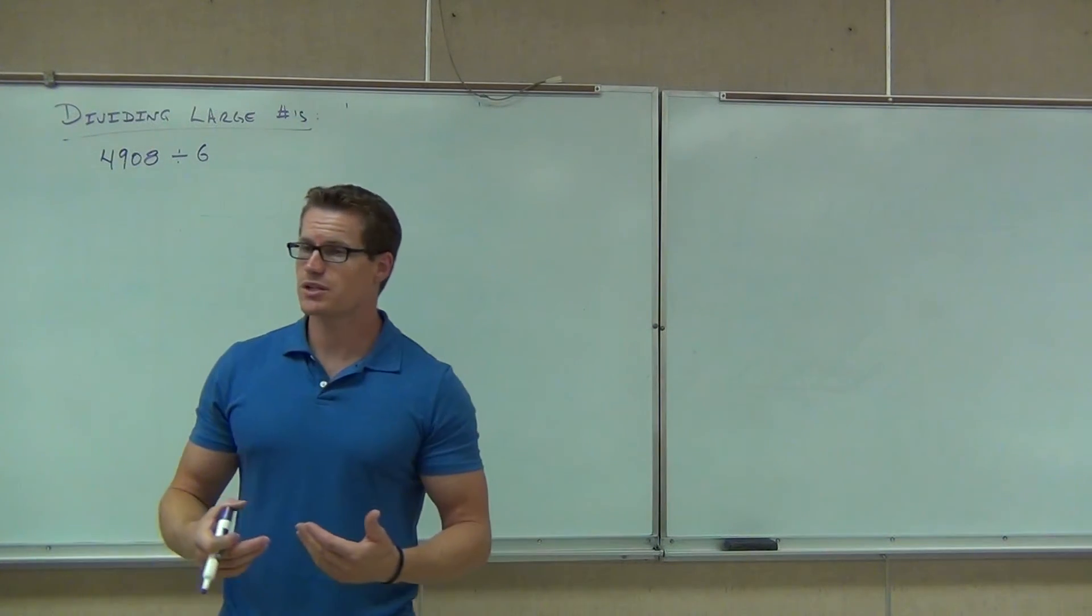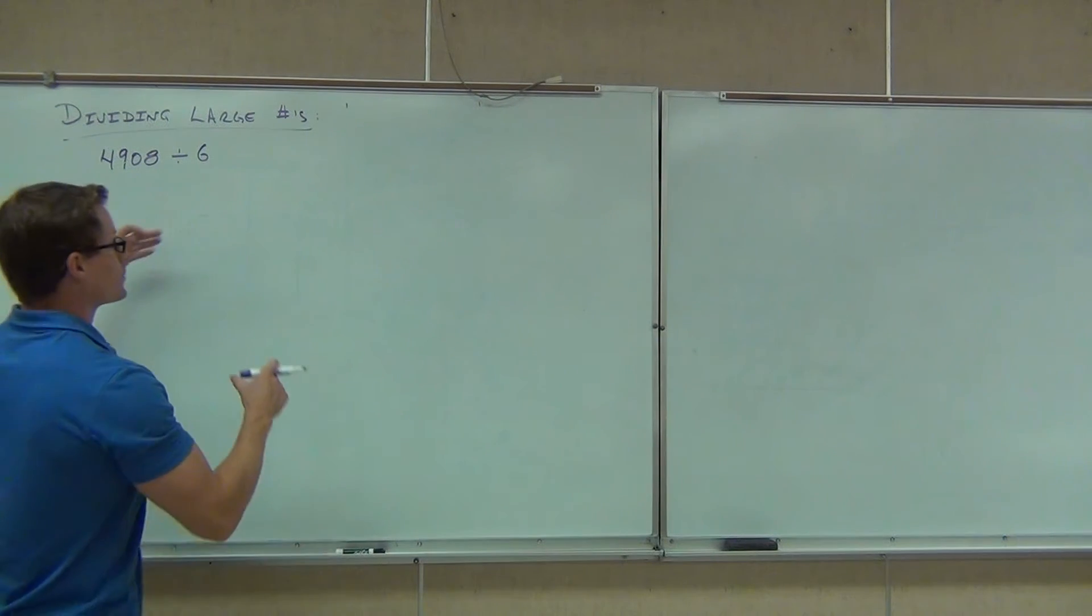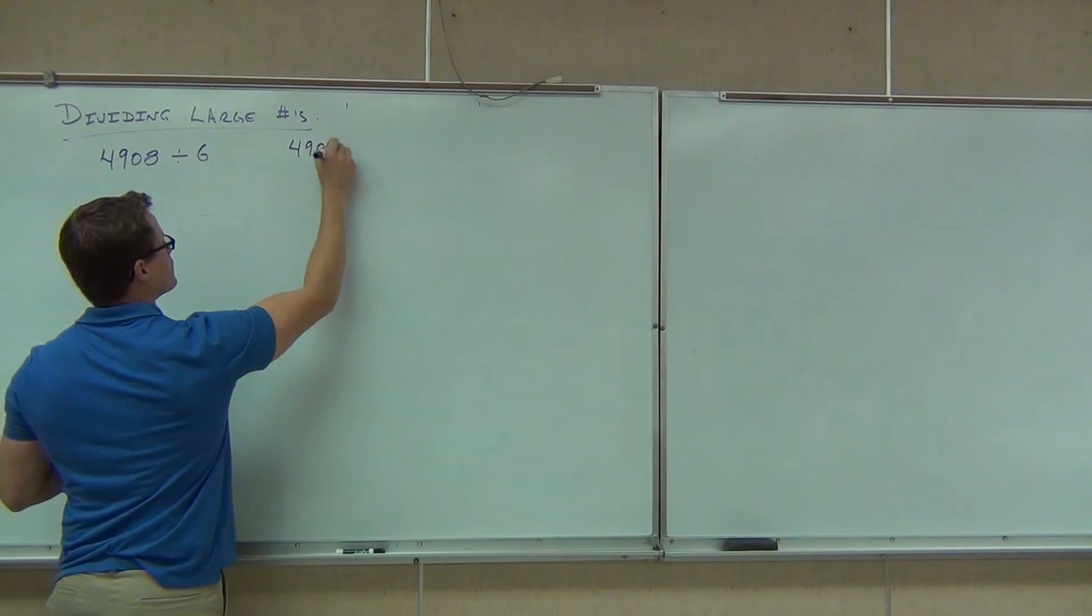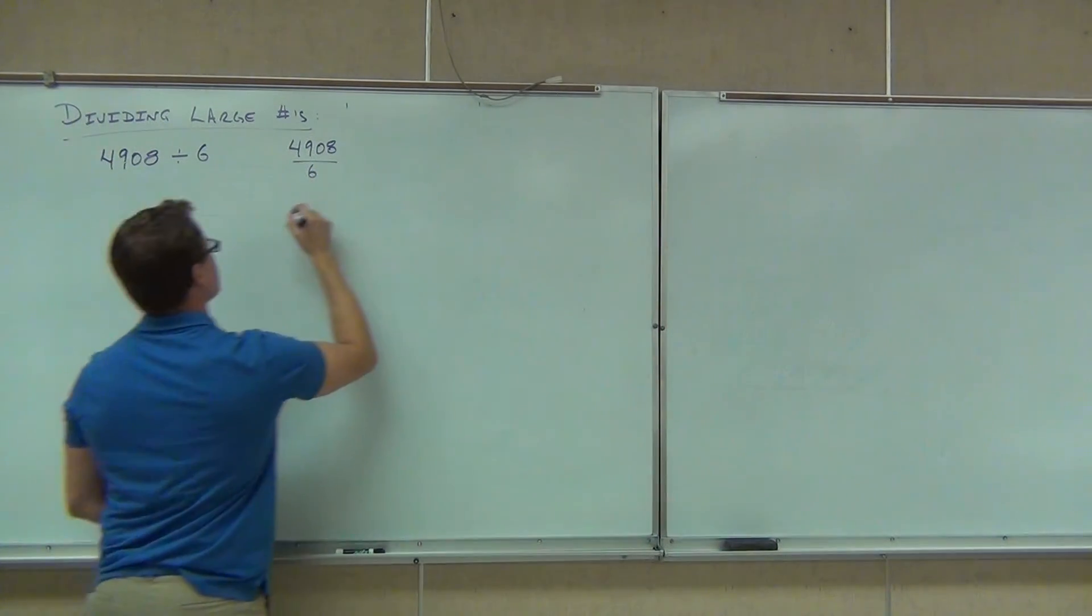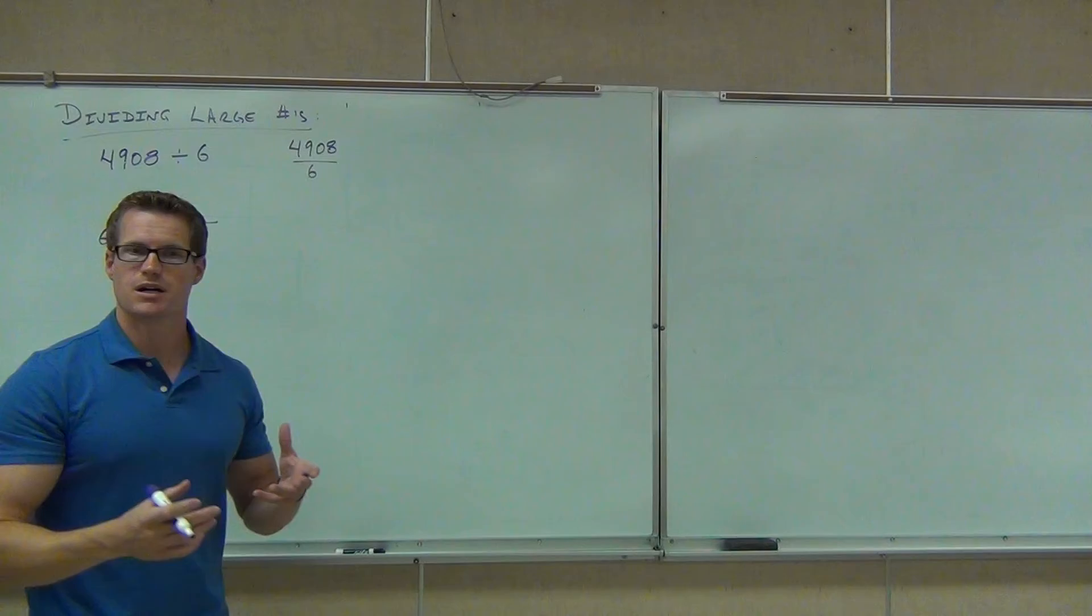In fact, we found three ways that we can represent division. We had this way, we had this way. Do you remember that way? The fractional form still means division. But the last way we had was this way. Which number went inside for this one? 4,908. Perfect. And we had the six over there. And this set up a method for us to actually divide these numbers.